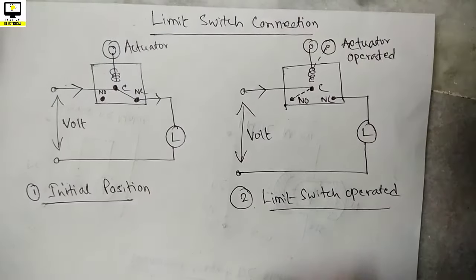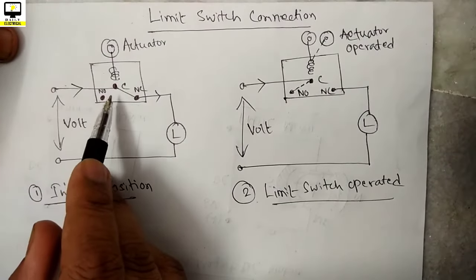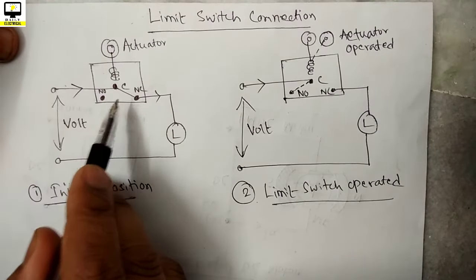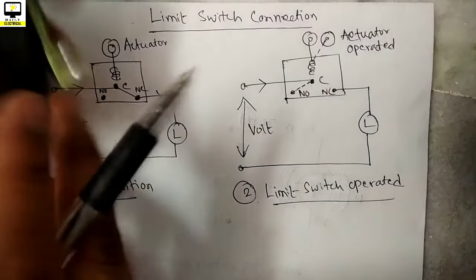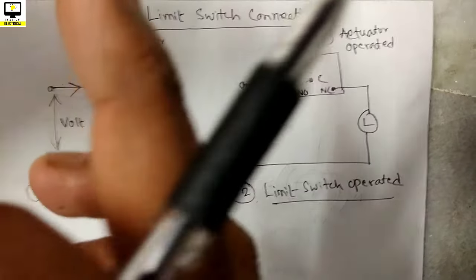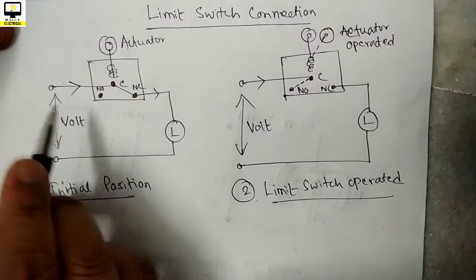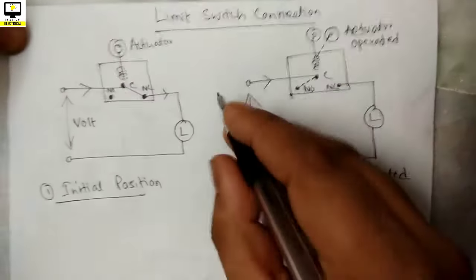See, in initial condition there is a contact between C and normally closed. Whenever you apply the voltage in this way by providing the common supply here and taking the output from the NC side, there will be a series connection and the load, or say it is your motor, it will be on because the series circuit will be formed.